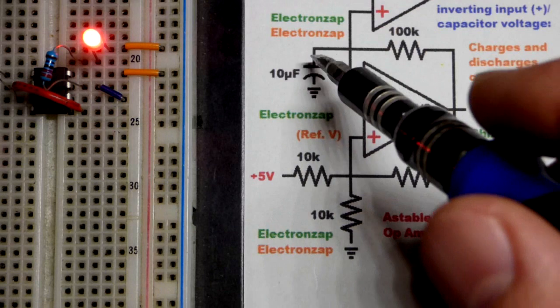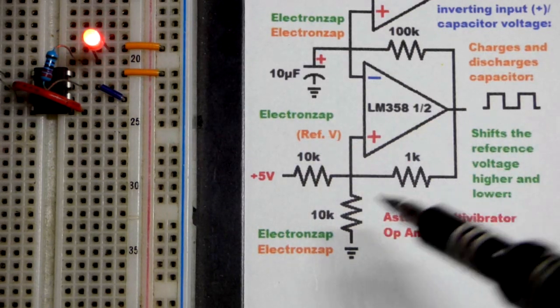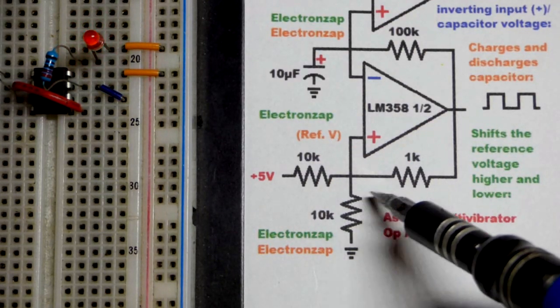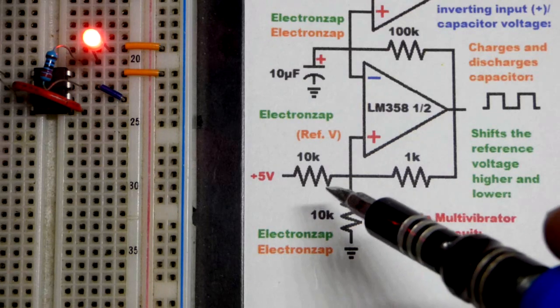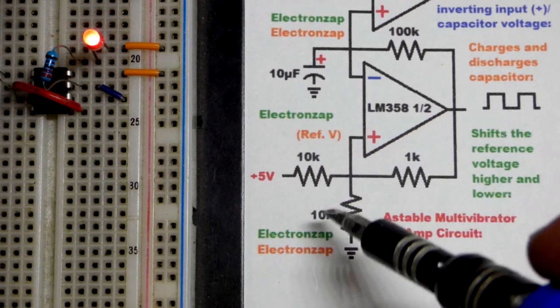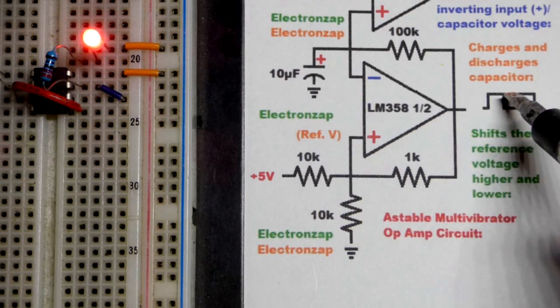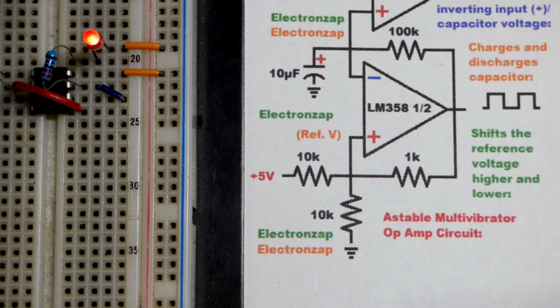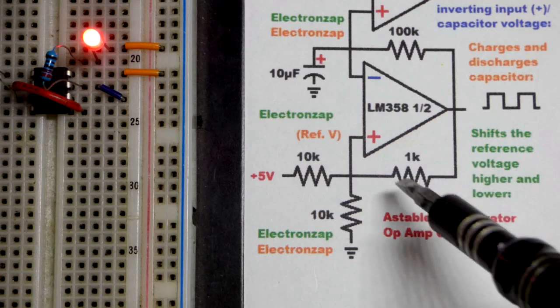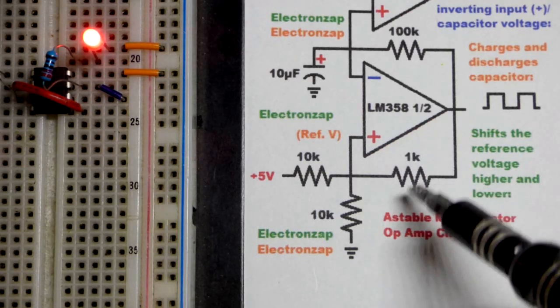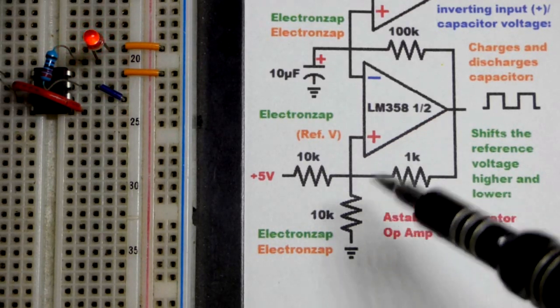The capacitor is going to discharge and keep discharging until it basically gets to ground. Then once it gets to ground it will have a lower voltage. This one will have a higher voltage, setting the output back high again. It's just going to keep repeating the process. We looked at that in the last video.